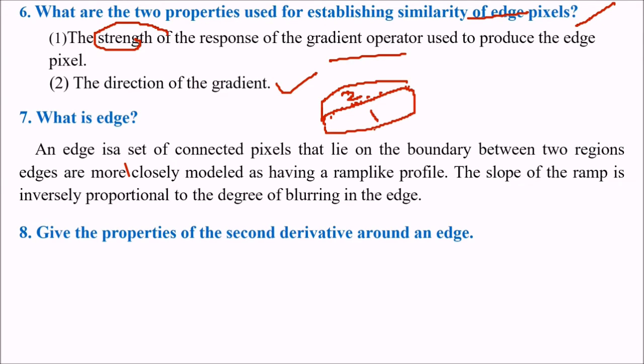They are more closely modeled as having the ramp like profile. So the slope of the ramp is inversely proportional to the degree of blurring in the image.